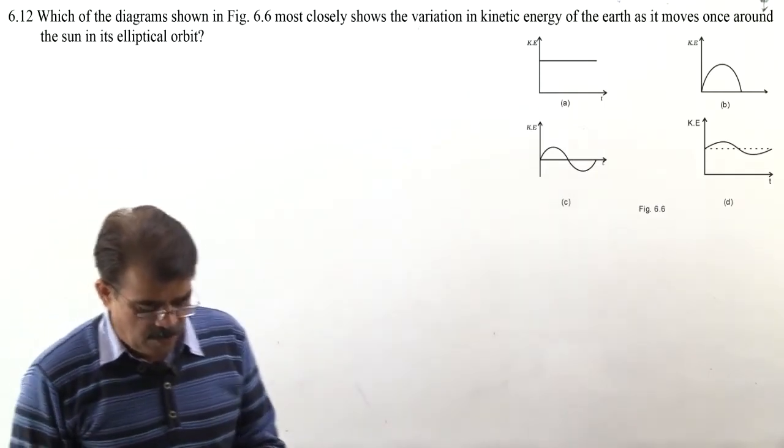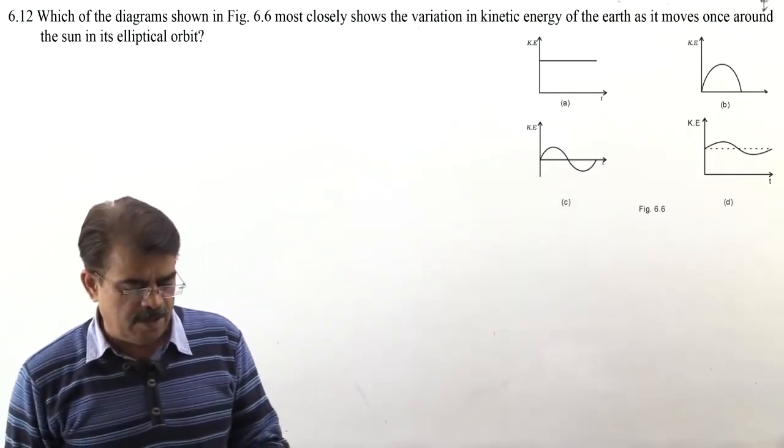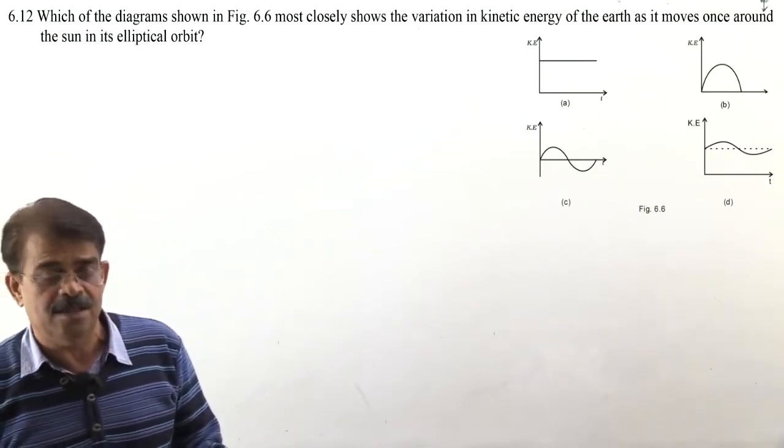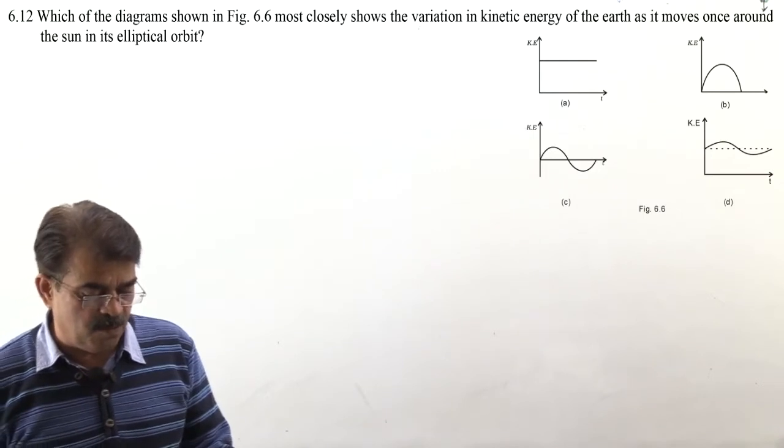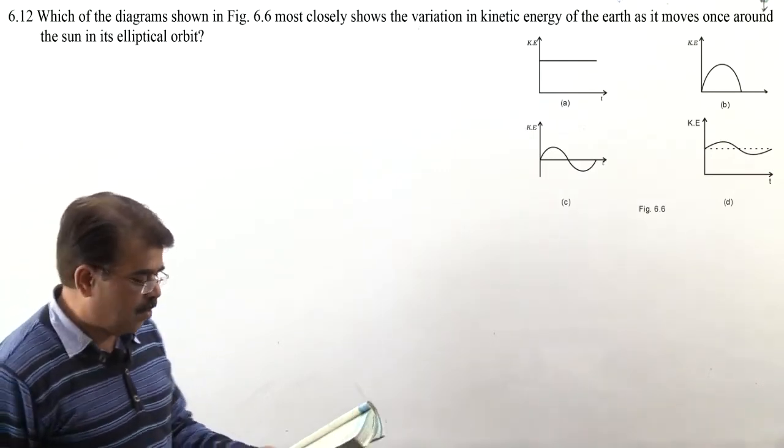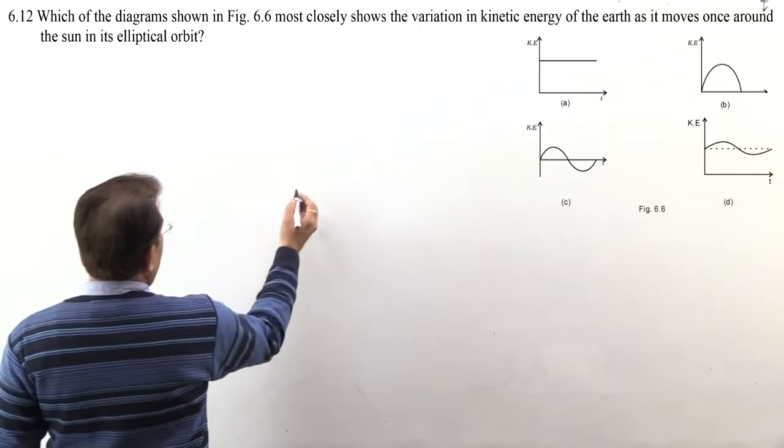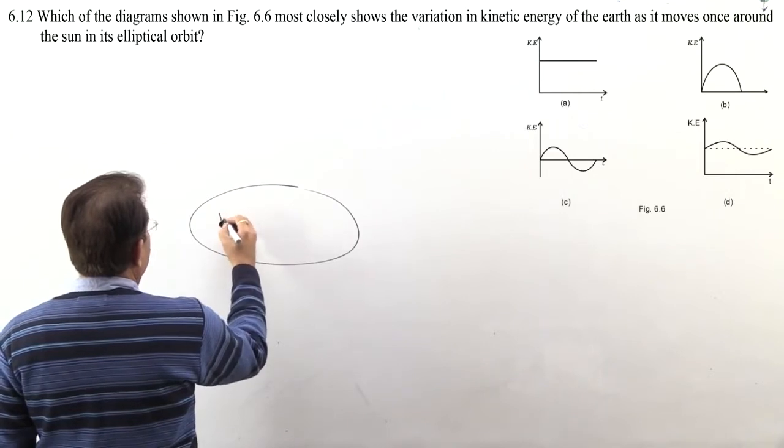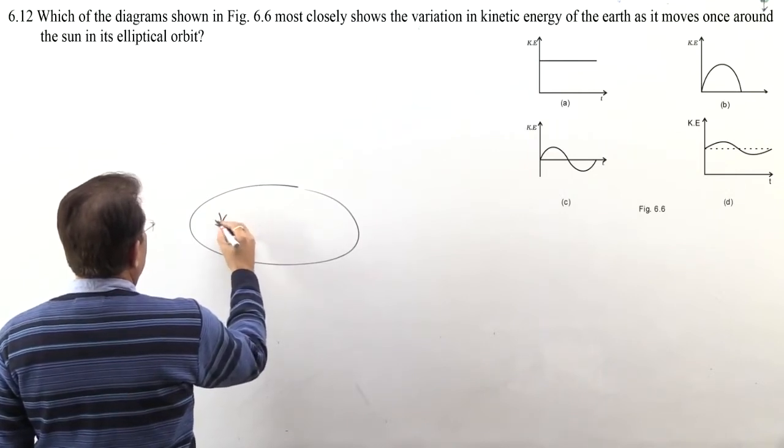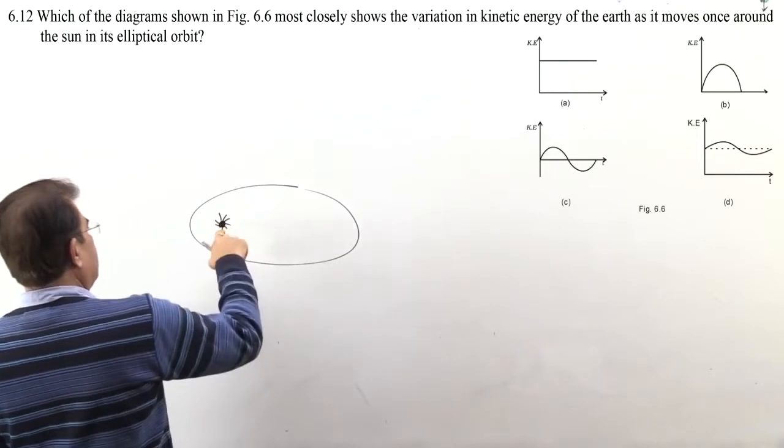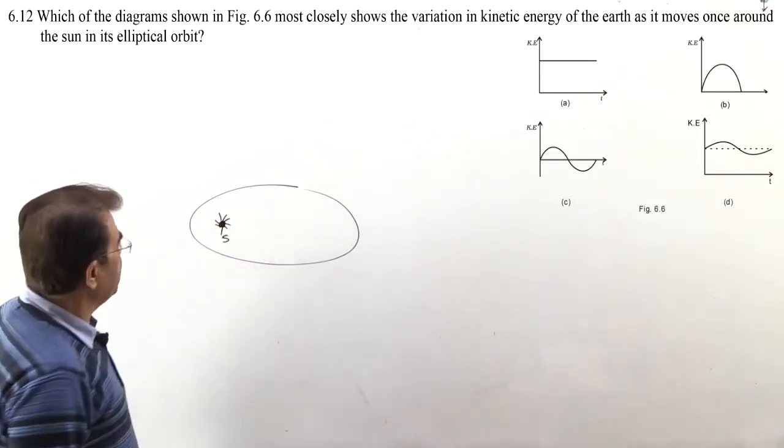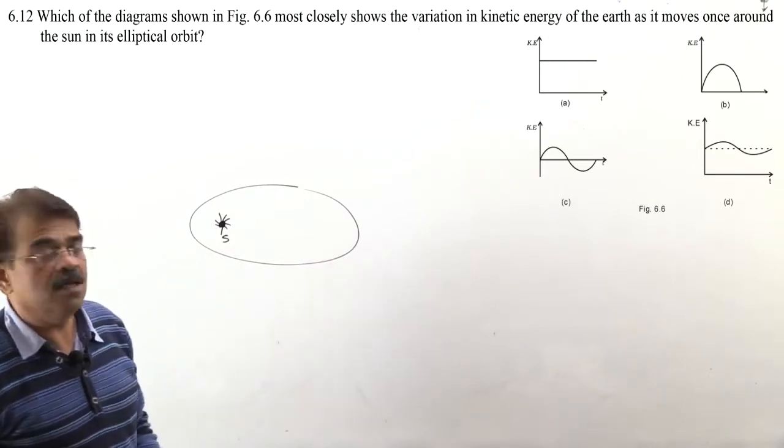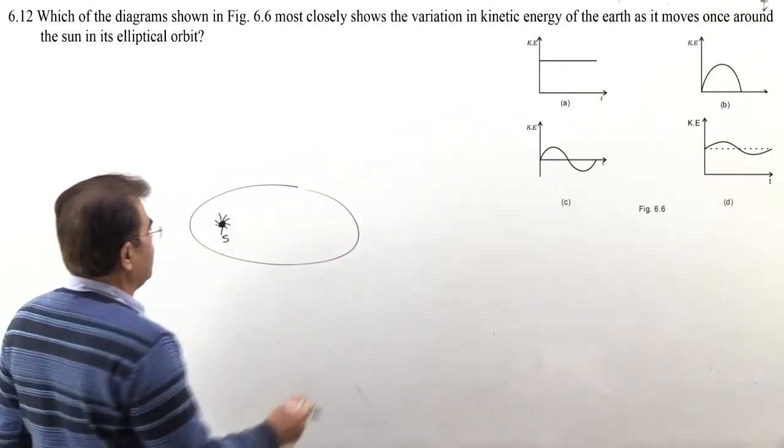The next question 6.12: Which diagram shown in figure 6.6 most closely shows the variation in kinetic energy of earth as it moves once around the sun in its elliptical orbit. Kepler's laws of planetary motion you must know. Around sun, any planet moves in elliptical orbit. This is sun, and sun is at one focus. So this is some planet's orbit. Its shape is elliptical. Sun is at this focus, for Earth.